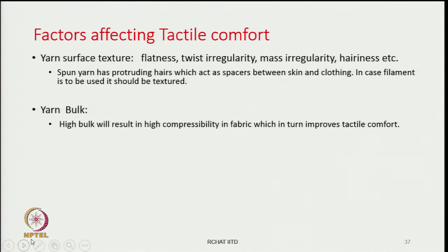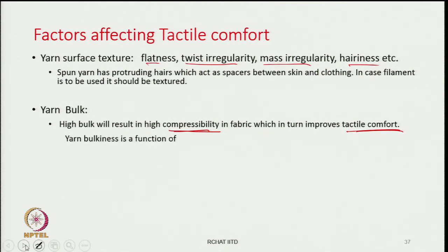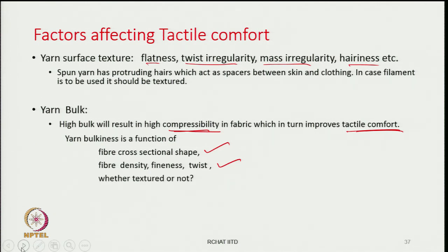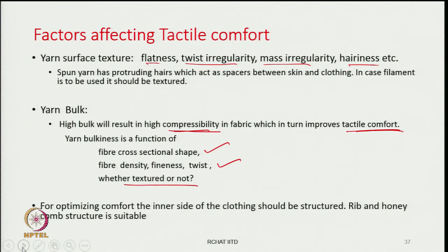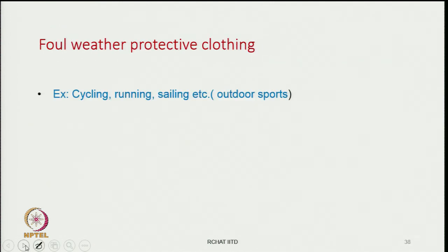Factors that affect tactile comfort include the surface texture of the yarn — flatness, twist irregularity, mass irregularity, and hairiness all become important. Yarn bulk is also significant — high bulk will result in high compressibility of the fabric and improves tactile comfort, making the fabric feel soft. Yarn bulkiness can be changed by the cross-sectional shape of fibers, fiber density, fineness, twist in the yarn, and whether the fibers are textured or not, especially in filament yarn.